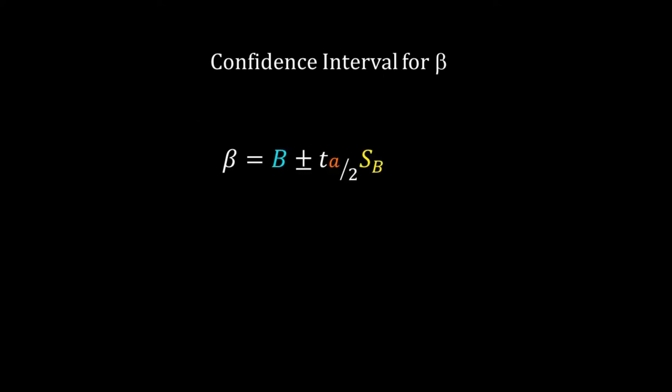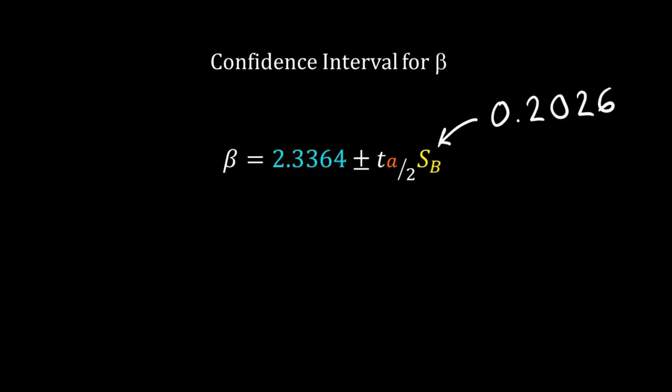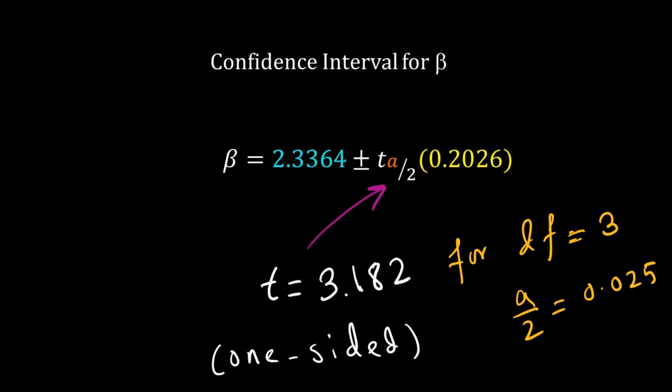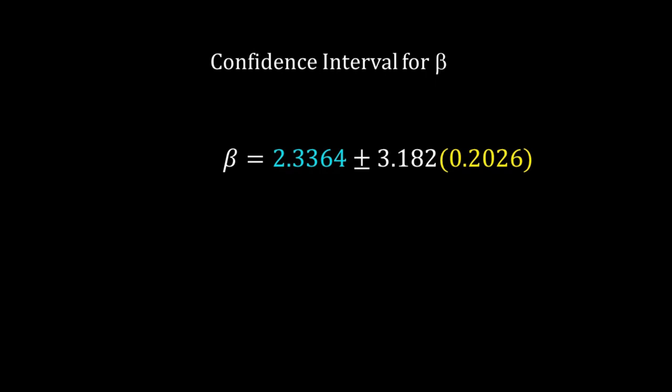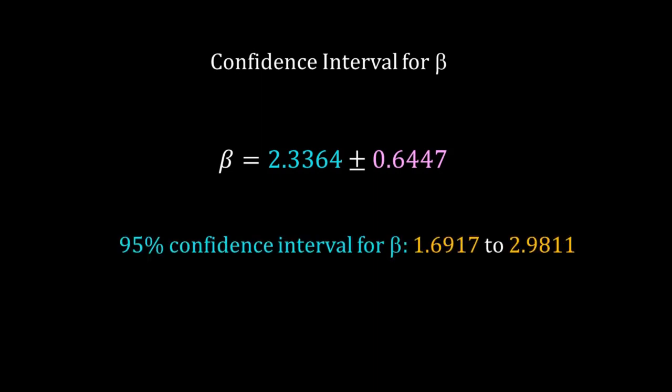Here is the formula for calculating the confidence interval: beta = b ± t(a/2) × sb. We have already calculated b and sb. Here, a is related to the confidence level: confidence level = 100 × (1 - a) percent. So for 95% confidence, a = 0.05. With b = 2.3364 and sb = 0.2026, we get the t-value from the t-table — taking the one-sided value, it is 3.182. Therefore, beta = 2.3364 ± 0.6447. In other words, the 95% confidence interval for beta is from 1.6917 to 2.9811.